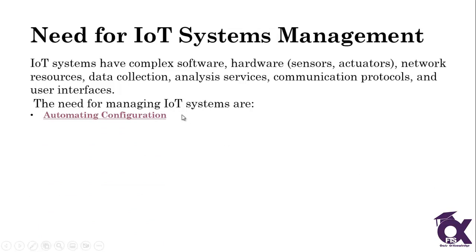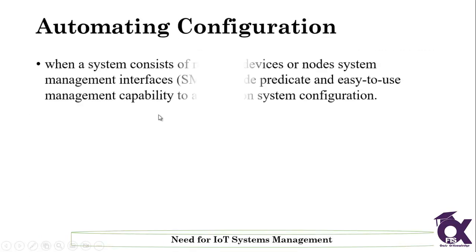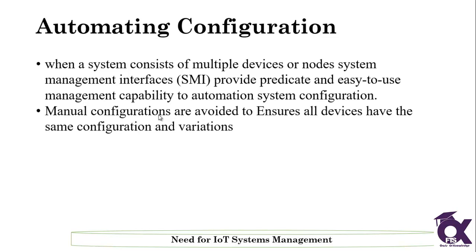The first need is automating configuration. When a system consists of multiple devices or nodes, we have to automate these devices. The system management interface (SMI) provides predefined and easy-to-use management capability to automate the system configuration, so manual configuration is avoided.